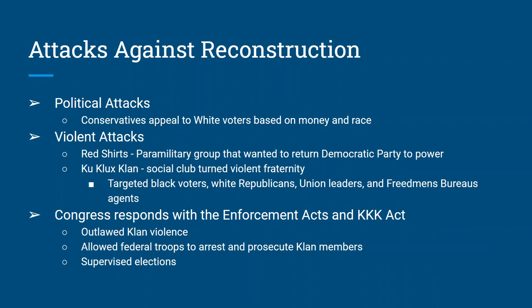There were attacks against Reconstruction — political attacks by conservatives appealing to whites based on ideas of race and power, and violent attacks from two groups. The Red Shirts were a paramilitary group whose goal was to return the Democratic Party to power through intimidation, and they were eventually folded into the KKK. The Ku Klux Klan itself started as a social fraternity in Pulaski, Tennessee, founded by Nathan Bedford Forrest, a Confederate general. It eventually turned into a violent organization with white hats, cross burning, and robes. The KKK targeted Black voters, but also white Republicans, leaders of labor unions, and agents of the Freedmen's Bureau.